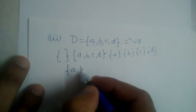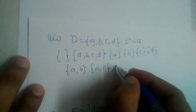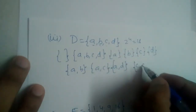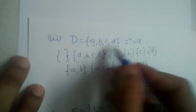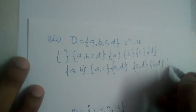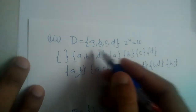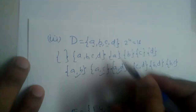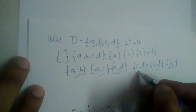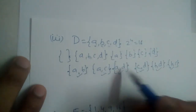Now for the two-element subsets of D: {a, b}, {a, c}, {a, d}, {b, c}, {b, d}, {c, d}. Counting so far: empty set and the set itself are 2, four single-element subsets are 4 more — that's 6 — and six two-element subsets brings us to 12.